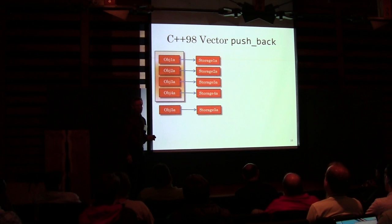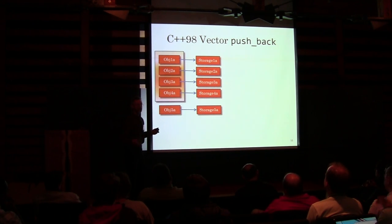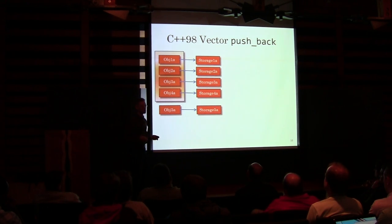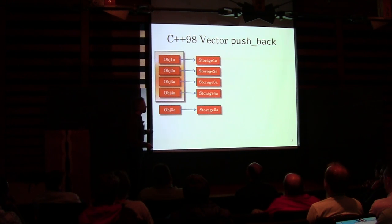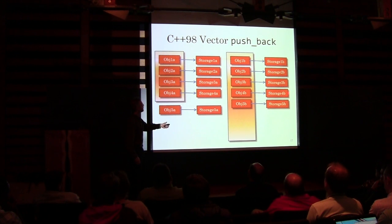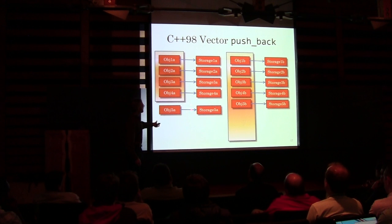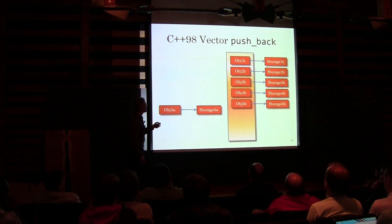We have similar kinds of problems with vector push_back. I've got a vector — let's talk about string as a favorite example because strings are ubiquitous. We've got a vector of strings. Our vector is full and we've got stuff sitting on the free store referenced by these strings. We're going to push one more object in. The vector is full, so we've got to make a new chunk of memory. Not only did we need to copy all the string data over, we had to copy all the free-store pointers as well. And once we've done all that copying, then we can wipe away the old one.